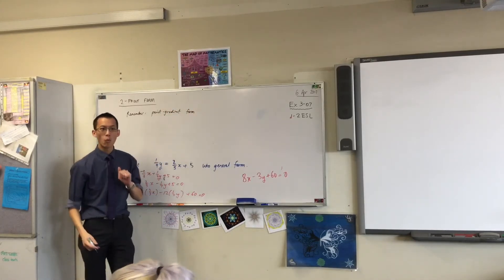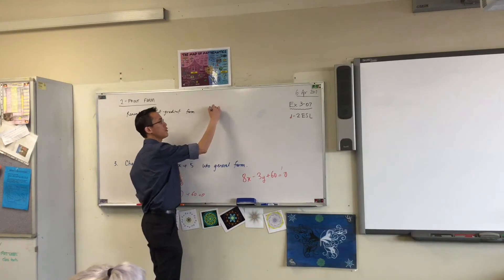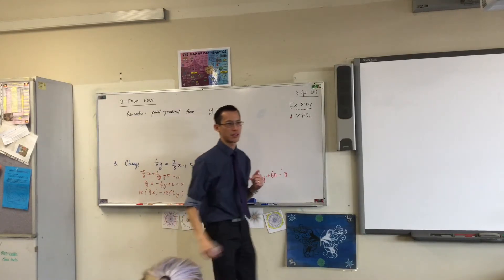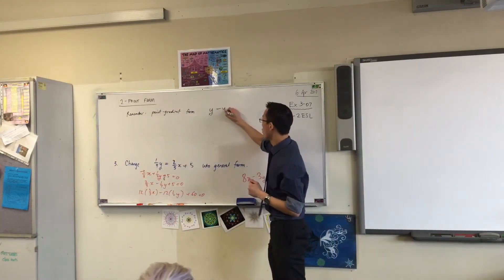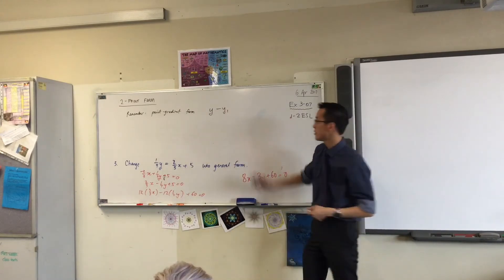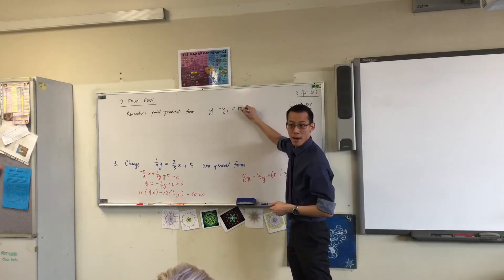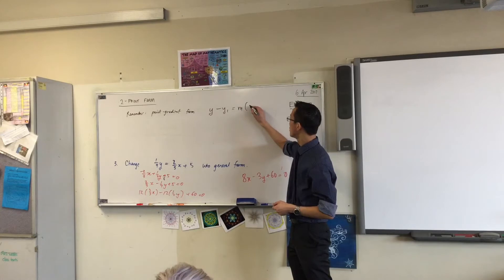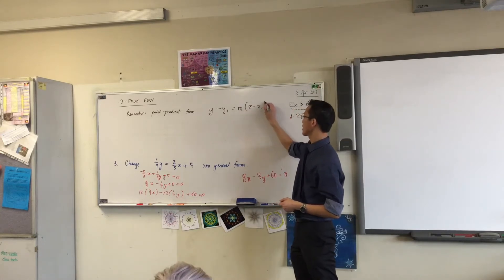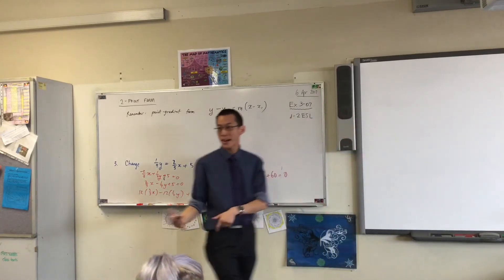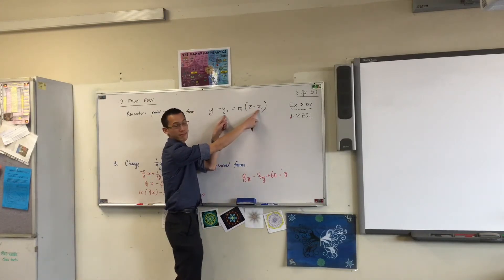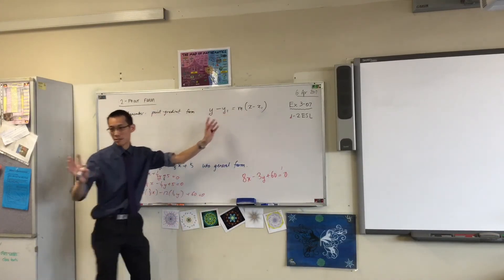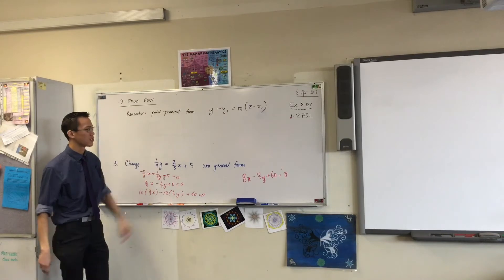Now, point gradient form, what does it look like? It starts with y minus y1. So y minus a y-coordinate equals m times x minus x1. Fantastic, so you can see why it's called point gradient form. There's a point, there's a gradient, you're done. If you've got a point and gradient, you insert it.